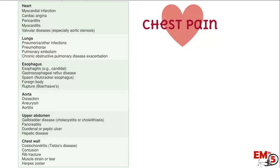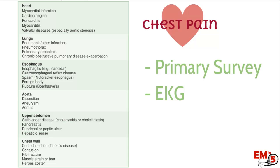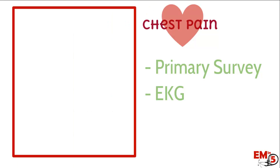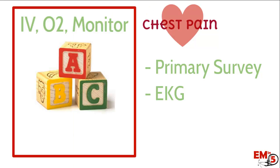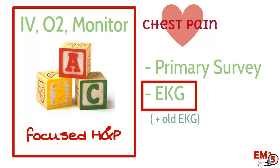So when a patient comes in with chest pain, first do your primary survey and then get an EKG. In the primary survey, that should include IVO2 monitor, do your ABCs, and do a focused H&P. You should also get an EKG, and make sure you get an old EKG so you can compare the two.